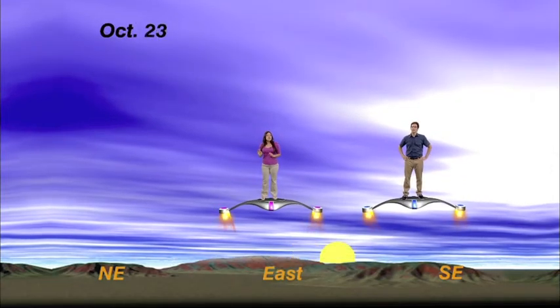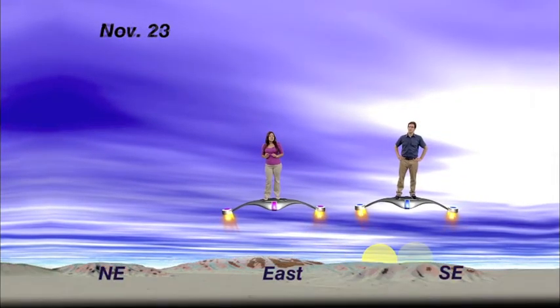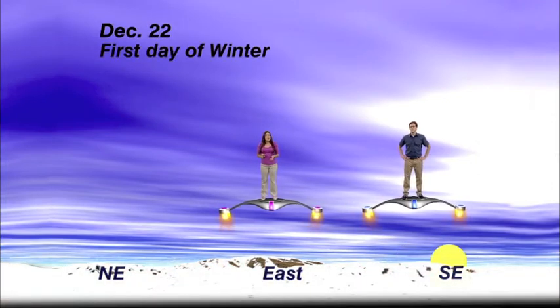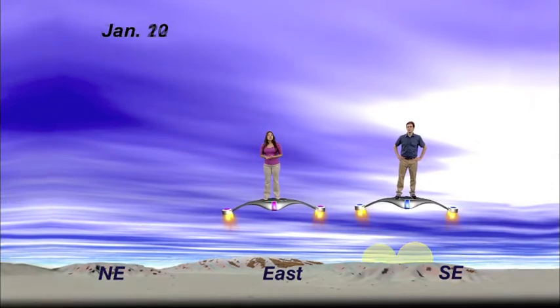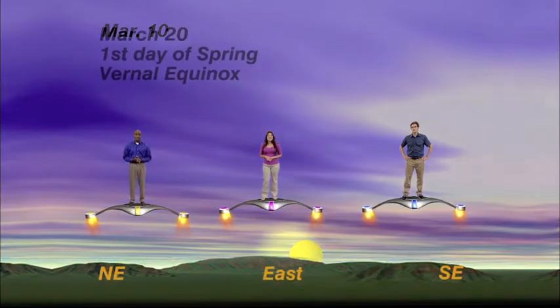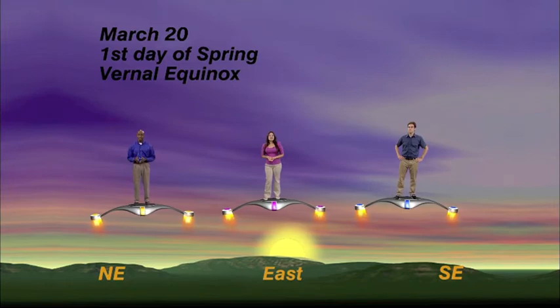Then, each successive day, it will rise a little bit farther south due east, until on the first day of winter, when it will rise at its farthest point southeast, after which it will slowly start to retrace its journey north once again. And this entire cycle repeats year after year after year.